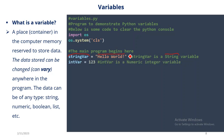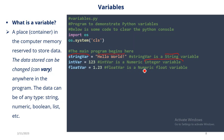Then we have int_var — numeric integer variable — int_var equal to 123. A numeric integer variable is a whole number variable. For instance, your age, the number of people in your family, the population of a city. Then we have float_var — a numeric float variable — this kind of variable contains decimal numbers. For instance, your height might be 1-point-something meters, or the amount of petrol in your tank could be 20.5 liters.